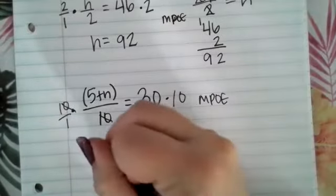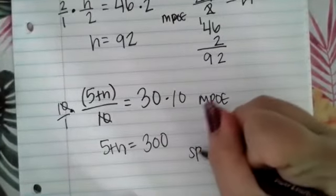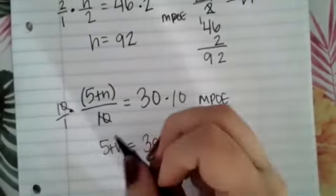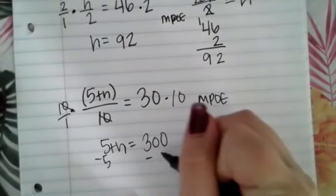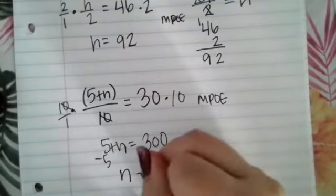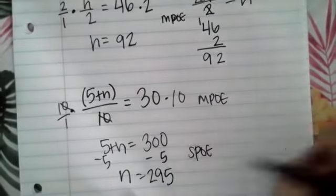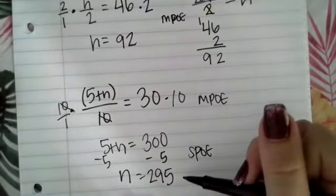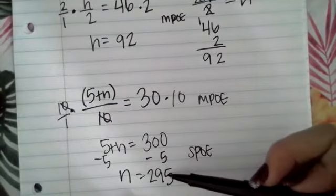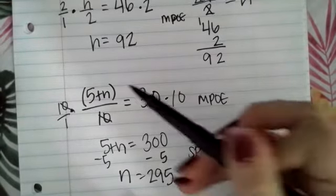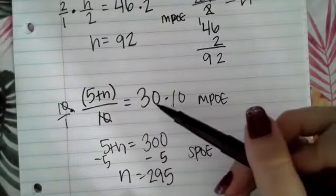And then to figure out what N is, we can now just use our subtraction property of equality. This is a positive 5, so if I subtract 5, I'm left with N equals 295, which makes sense. If we go back and plug it in, 5 plus 295 is 300, 300 divided by 10 is 30.